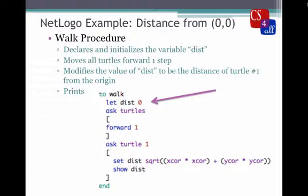After that, we move all the turtles forward one step. Then we ask Turtle 1 to calculate its distance from the origin using a standard distance equation. Now, you might not know how to calculate the distance from the origin, and that's okay. The important thing here is to see how we have modified the value of the dist variable to the new distance from the origin.